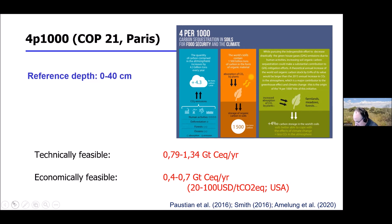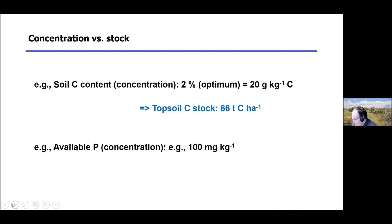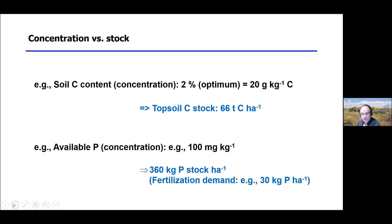The challenge is we have different units: gigatons for total amounts versus the concentrations we actually measure. For example, an optimal carbon content might be two percent of soil organic carbon — which translates to 20 grams per kilogram of soil. For phosphorus, a typical concentration might be 100 milligrams of plant-available phosphorus per kilogram. The question is how do you translate these concentrations to carbon or nutrient stocks per hectare?